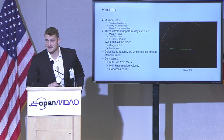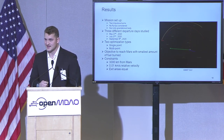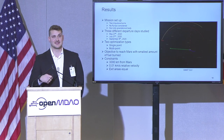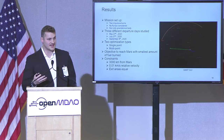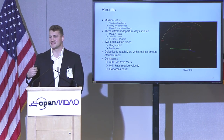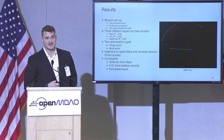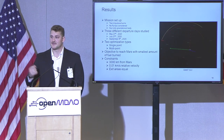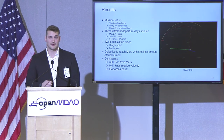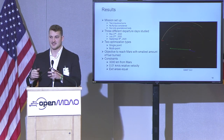Now onto the results. Looking at a two finite burn interplanetary mission to Mars — currently no flybys are being considered and the Sun is the only gravitational body. Three different departure dates were studied: May 27th, July 27th, and September 8th, 2020, all taken from a porkchop plot. Two different optimization types were run: single point with various configurations, as well as ending with a multipoint. The objective is to reach Mars with the lowest fuel burn possible, subject to a couple constraints: the relative position needs to be within 3,000 kilometers, relative velocities need to be within 0.01 kilometers per second, and the exit areas between both burns must be the same, because we're using the same engine for both burns.